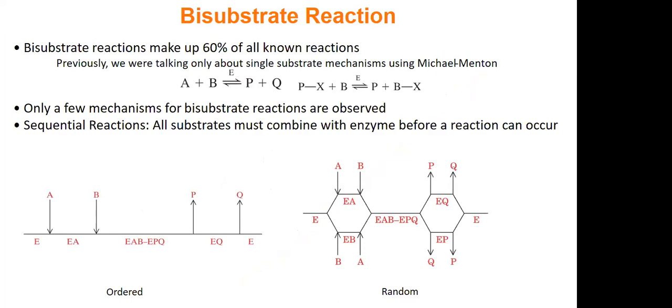Tri-substrate, I guess, is theoretically possible, just super rare. Four would be incredibly rare. But there are a fair number that are bisubstrates. In fact, 60% of all reactions, right?